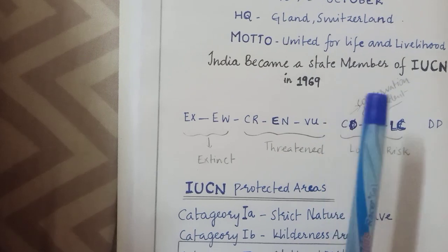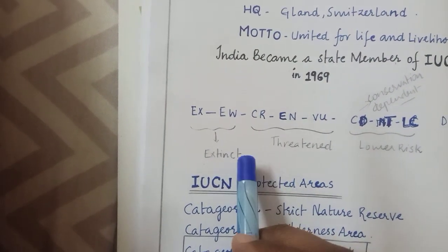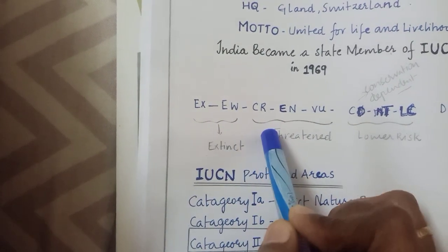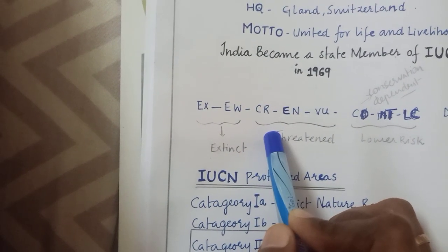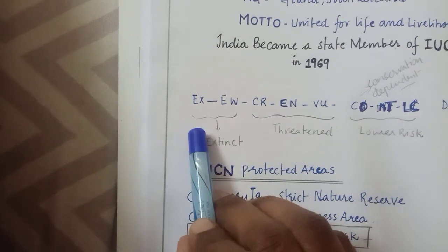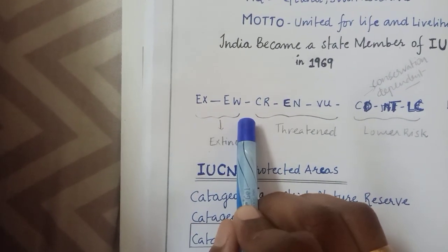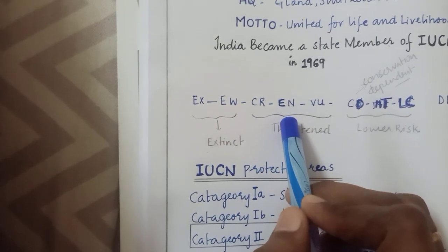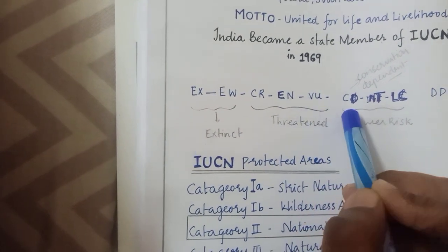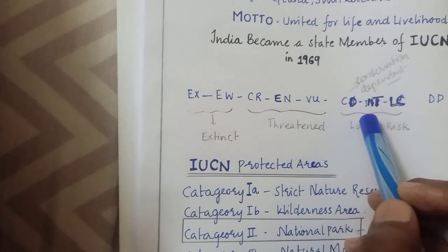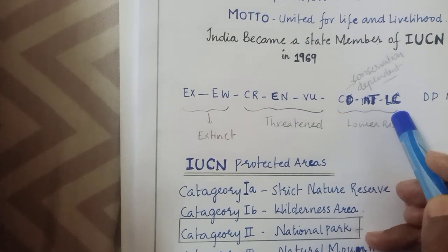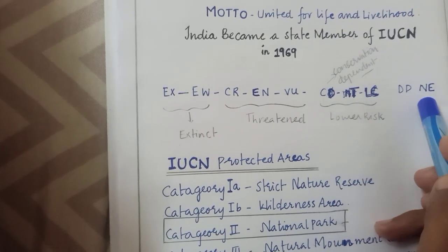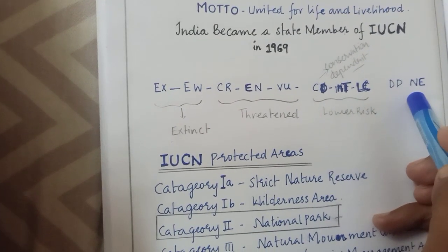According to IUCN, there are various categories for the conservation of living organisms. These include: extinct, extinct in wild, critically endangered, endangered, vulnerable, conservation dependent, near threatened, least concerned, data deficient, and not evaluated.